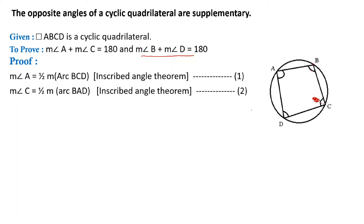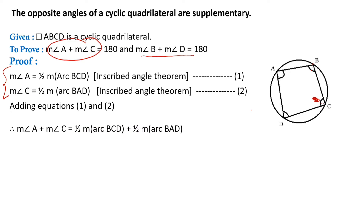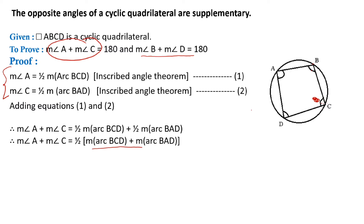We want angle A plus angle C, so we add equation one and two. Adding them gives: measure angle A plus measure angle C equals half times measure arc BCD plus half times measure arc BAD. Taking half as a common factor, we get half times the quantity measure arc BCD plus measure arc BAD.